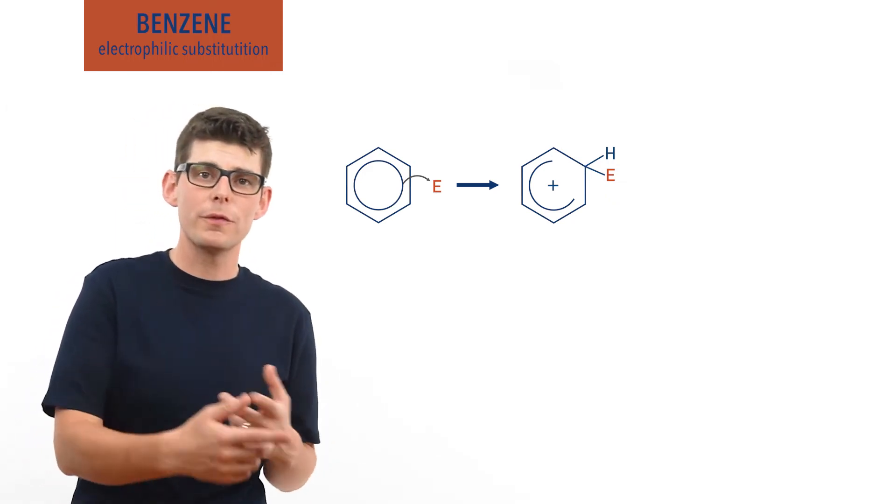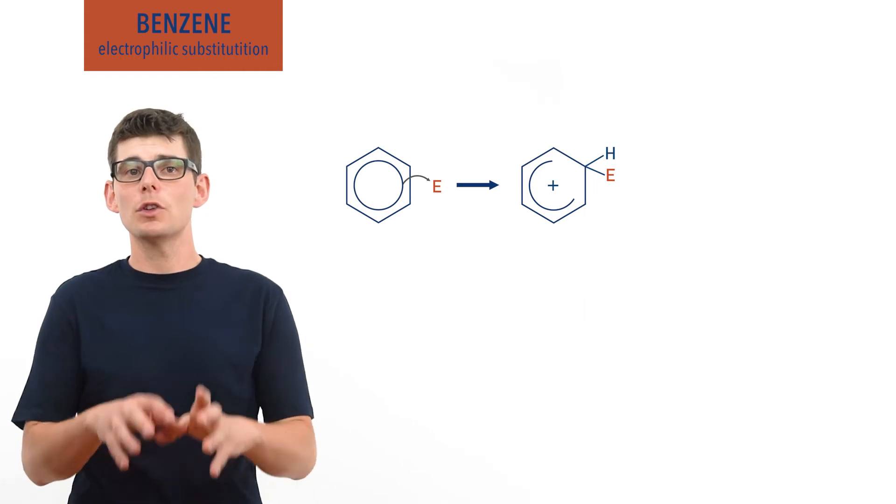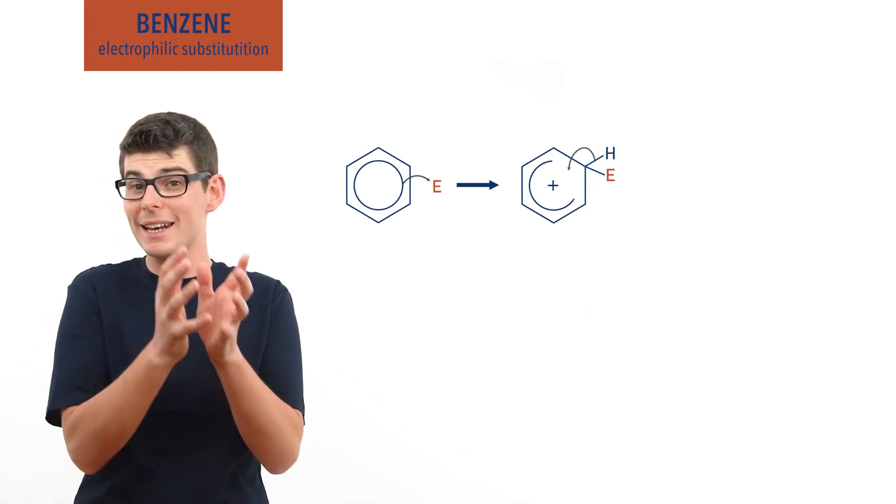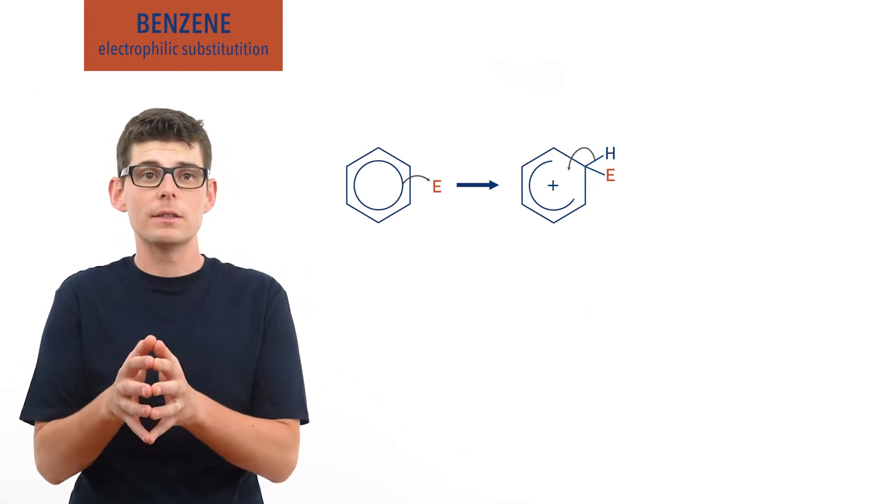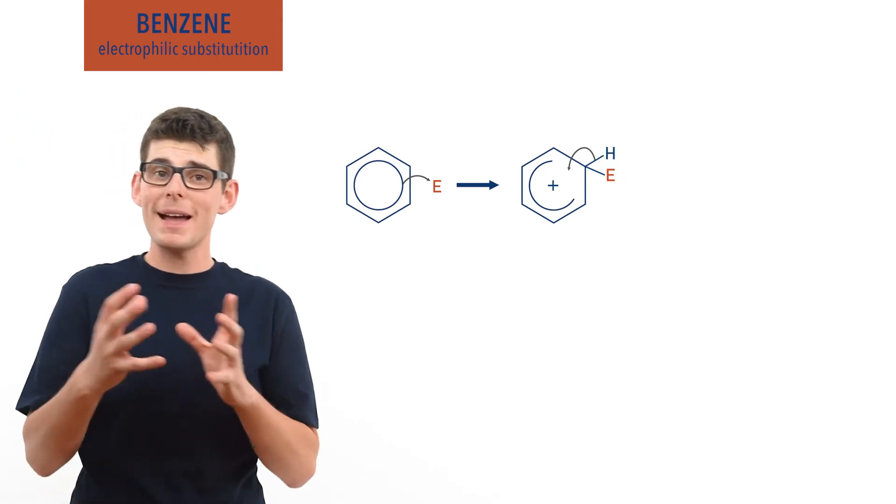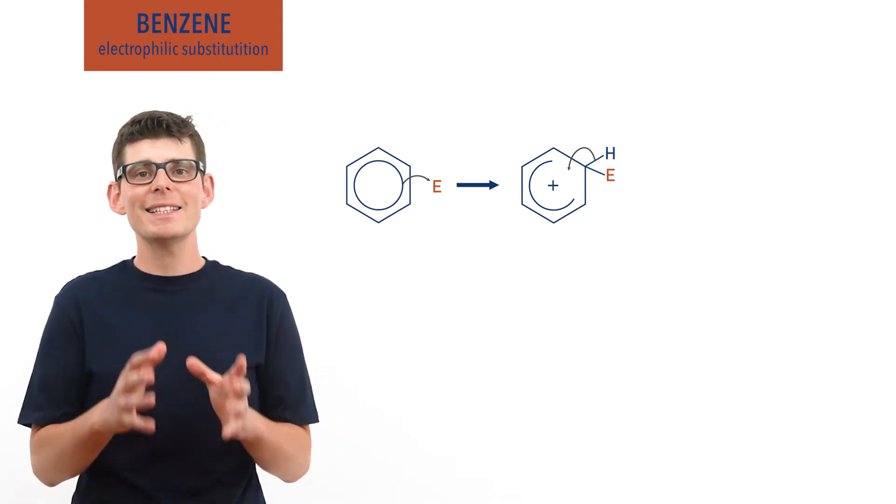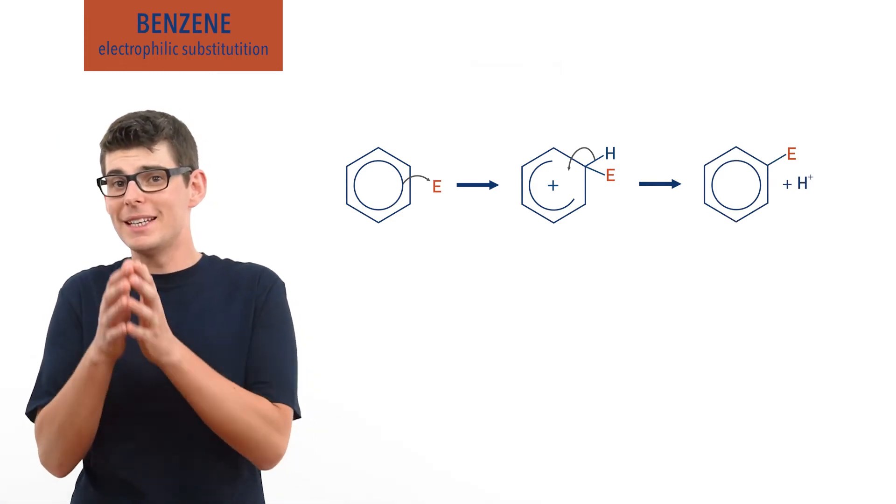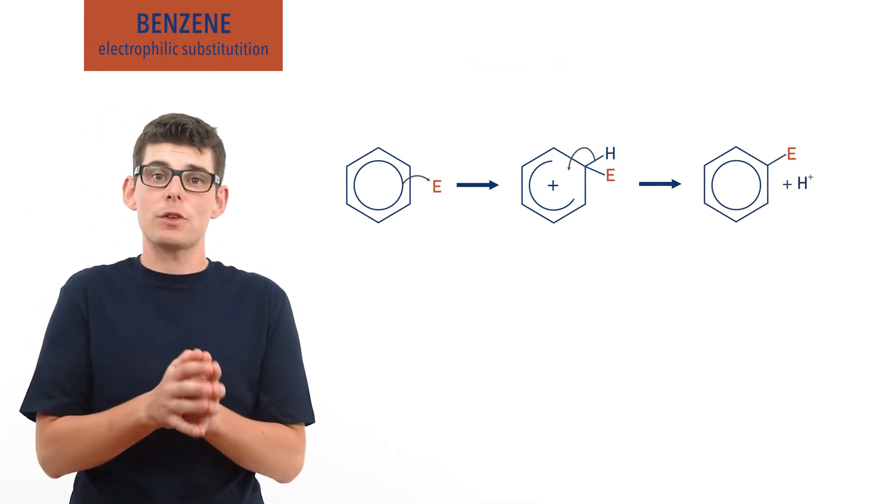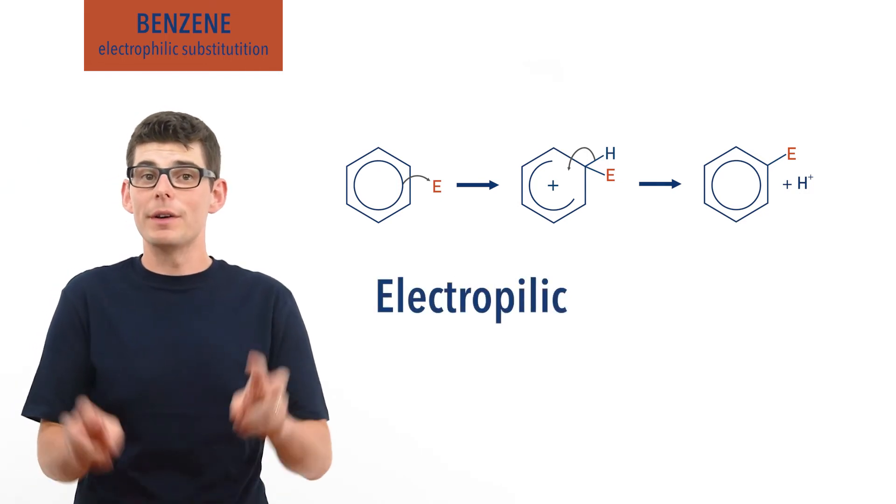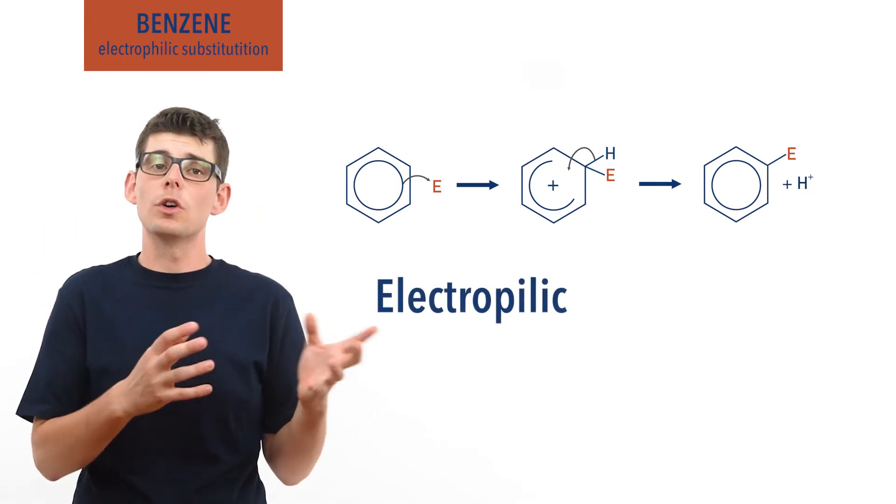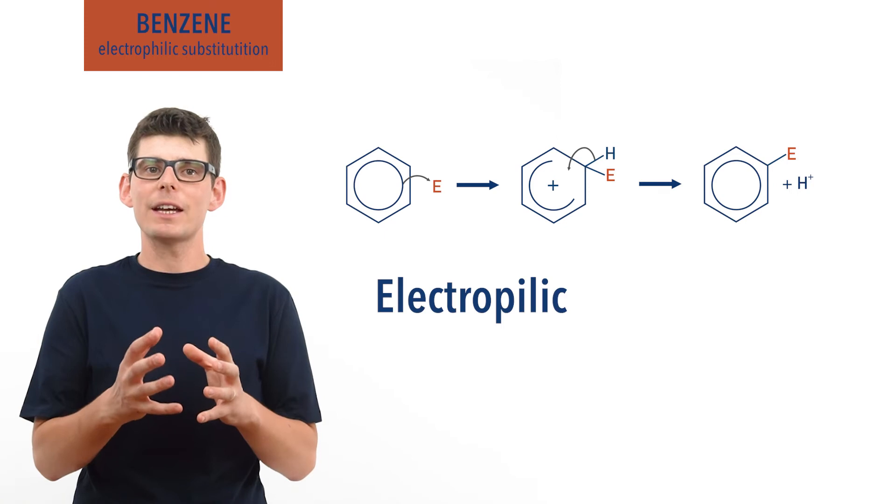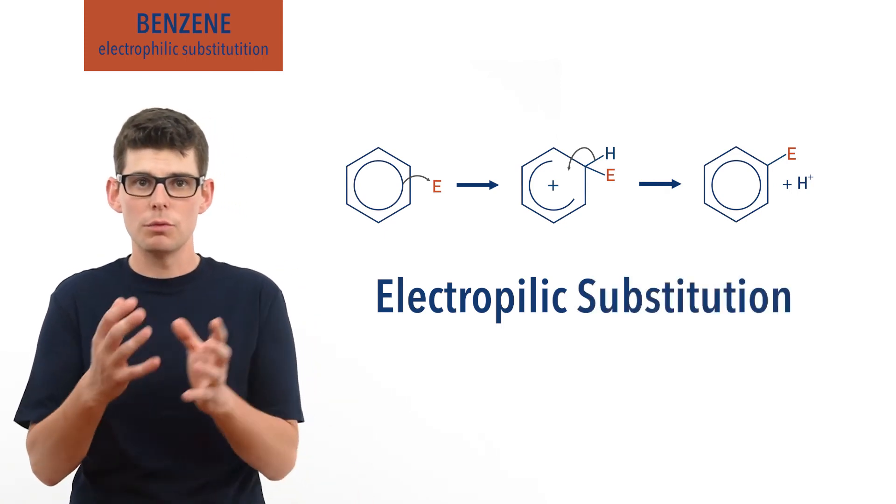To reform a full ring, the carbon-hydrogen bond on the same carbon as the carbon-electrophile bond breaks. The electron pair is put back into the delocalized system and an H+ ion is removed. The thing causing the reaction to happen is an electrophile making the reaction electrophilic, and the electrophile is swapped for a hydrogen on a carbon atom making it an electrophilic substitution reaction.